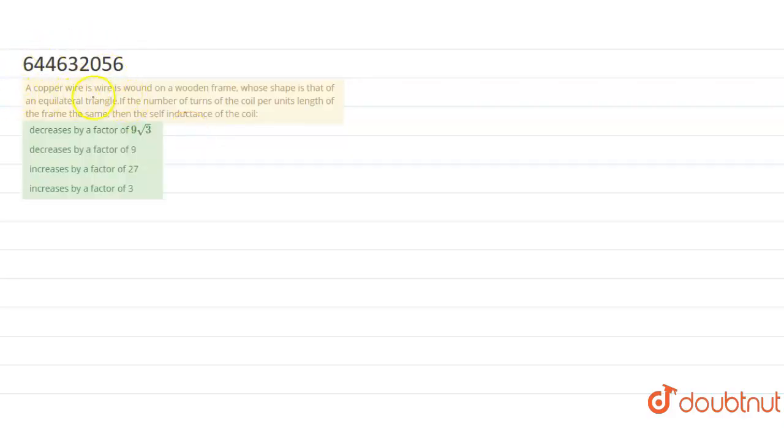So guys, here we have a question: A copper wire is bounded on a wooden frame whose shape is that of an equilateral triangle. An equilateral triangle means all the sides of a triangle are the same. So a copper wire is bounded along the sides of an equilateral triangle.